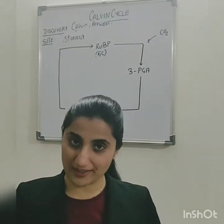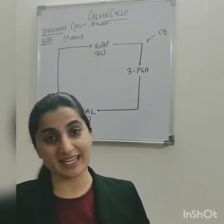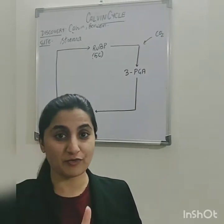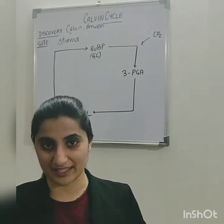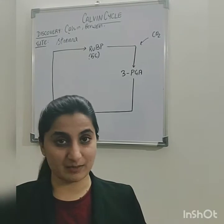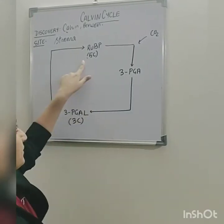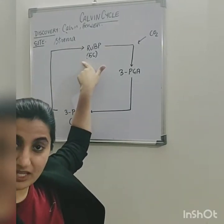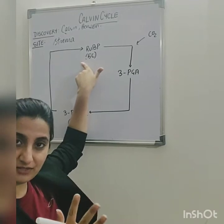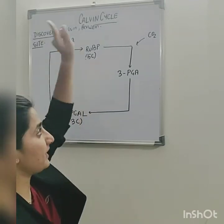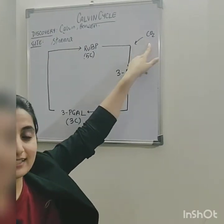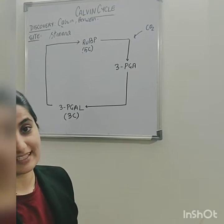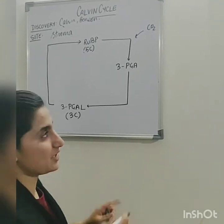In this stroma of the chloroplast, there is already an existing 5-carbon molecule with 2 phosphates on it, and the name of that molecule is ribulose-1,5-bisphosphate. With the 5 carbons of ribulose-1,5-bisphosphate, 1 carbon dioxide is going to add up. This process is said to be carboxylation.